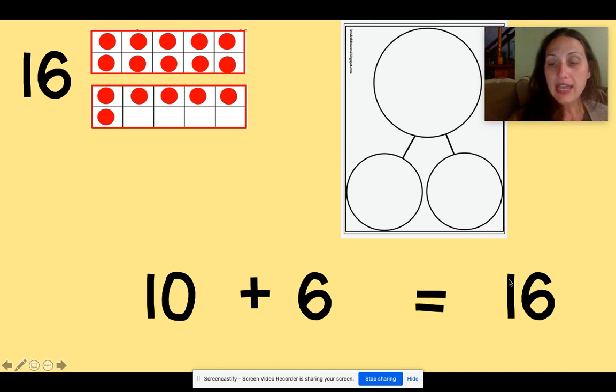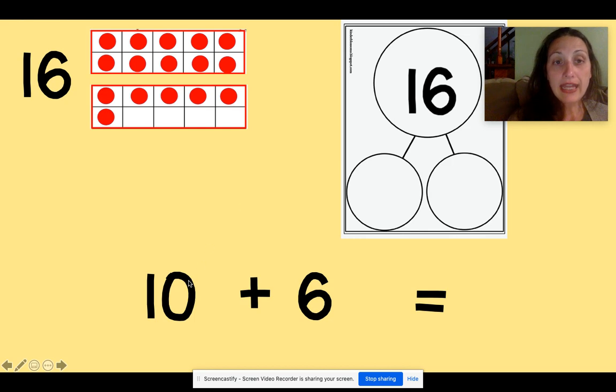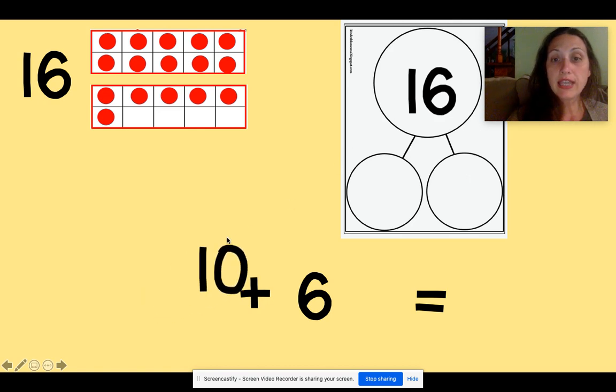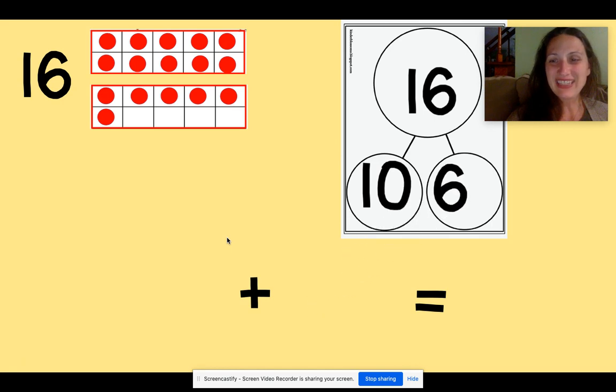My whole number is the big number. That's the number of the day. Here's my big number, 16. I'm going to put that right at the top of my number bond. Now the two parts are the numbers we need to make our whole number, to make our 16. So 10 and 6 are the parts. Let's watch the 10 go into the number bond, and the 6 go into the number bond. We can say 10 and 6 is 16.